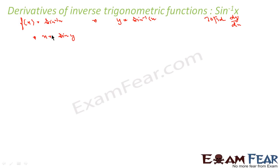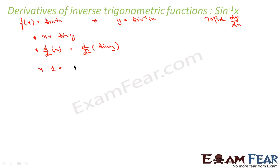Now if you see, this is just a function and I can use the implicit function method to find the derivative. So let's differentiate everything with respect to x. Differentiating x = sin y, I get: 1 = cos y · (dy/dx), so dy/dx = 1/cos y.